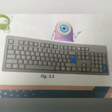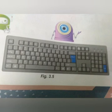The keyboard has many buttons on it, which are called keys. Can you see the keyboard? Alphabet keys are used for typing words and sentences. The keys with 0 to 9 marked on them are called number keys. Number keys are also called numeric keys. They are used for typing numbers.